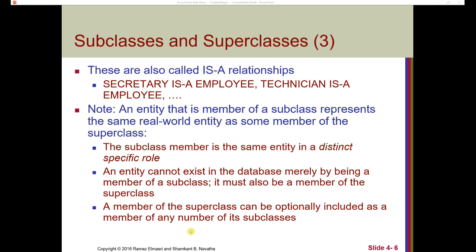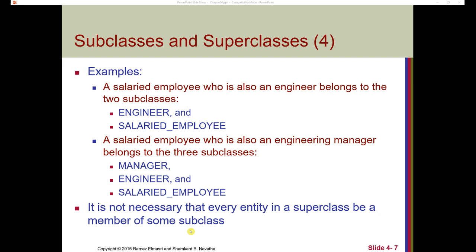For example, we may have a salaried employee who is also an engineer that belongs to two different subclasses: engineer and salaried employee. We may also have a salaried employee who is also an engineering manager that belongs to three different subclasses: manager, engineer, and salaried employee.